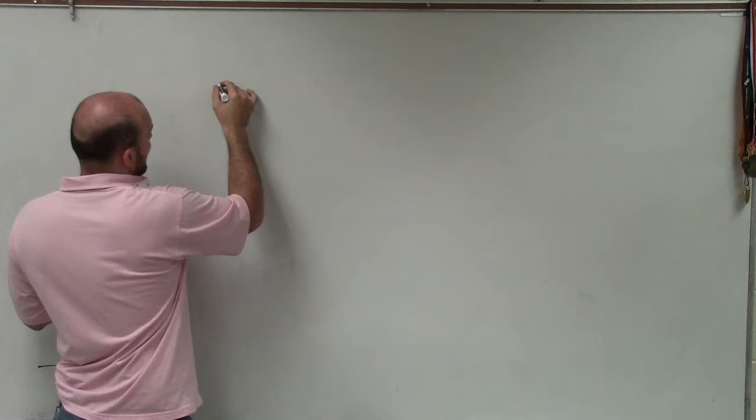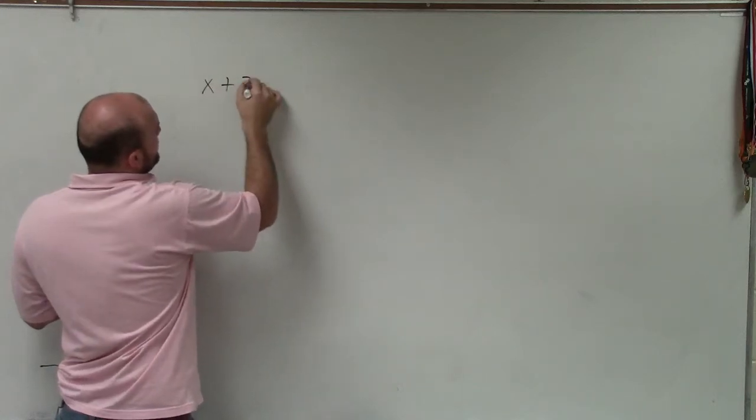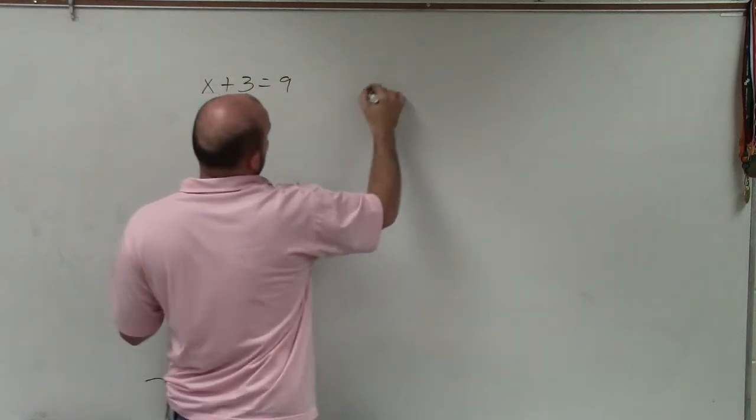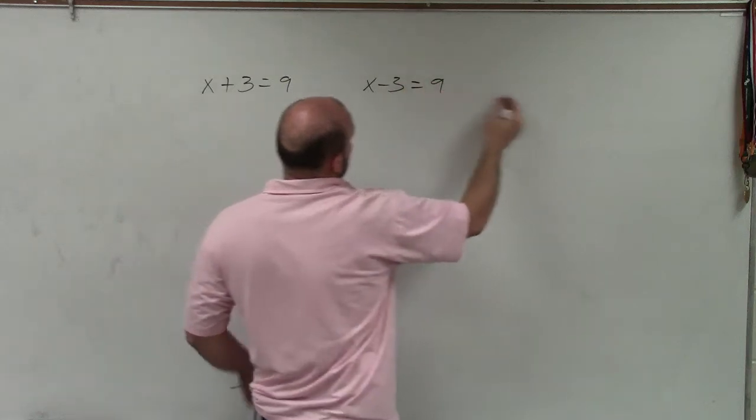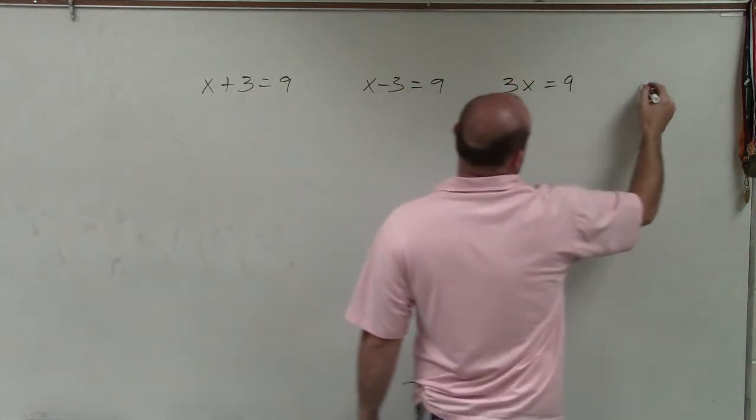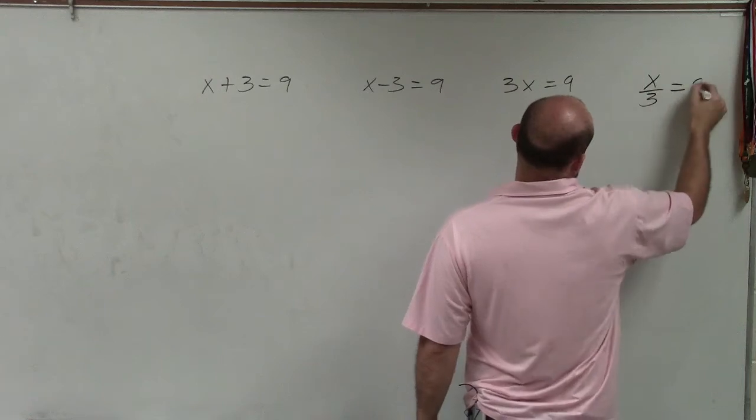So let's say we have here x plus 3 equals 9, x minus 3 equals 9, 3x equals 9, and x over 3 equals 9.